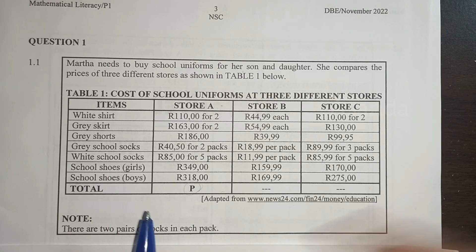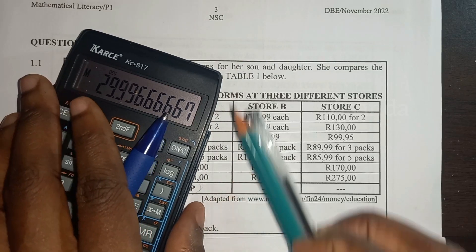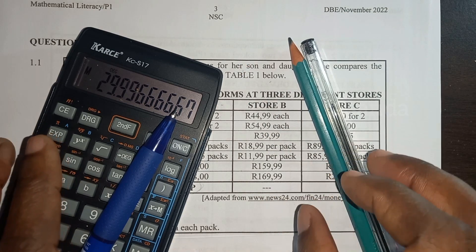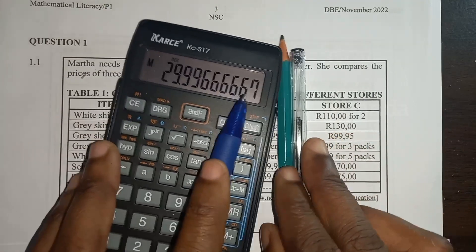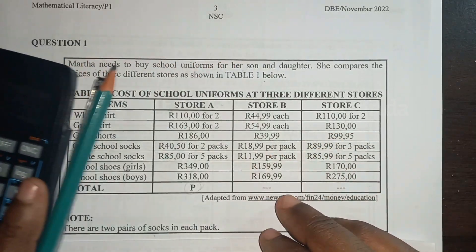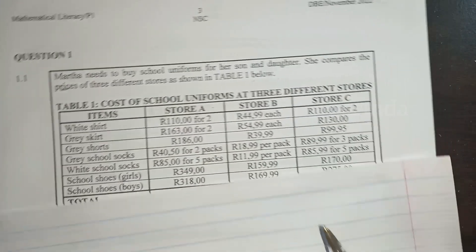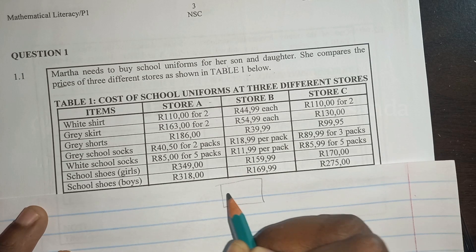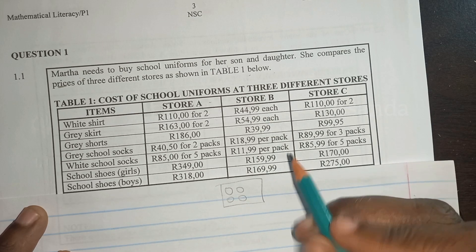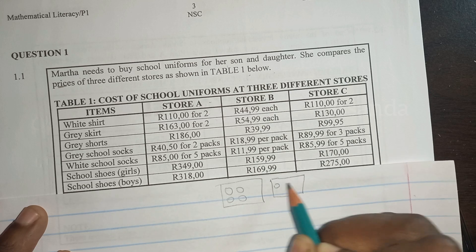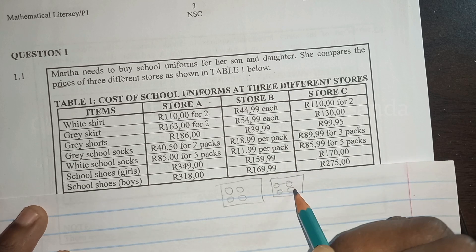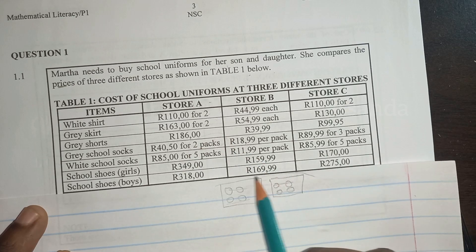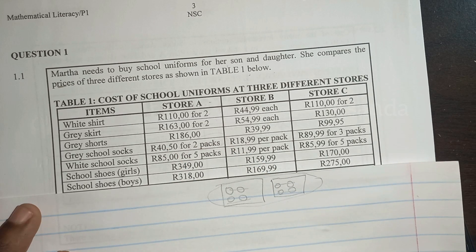A pair means two socks, so when you open one pack you find four individual socks — two pairs. Each pack contains two pairs, meaning four singular socks total. So when they say two pairs in a pack, you get two pairs in the first pack and two pairs in the second, and for the whole thing you pay 40.50.